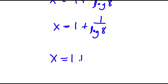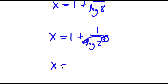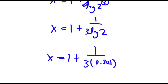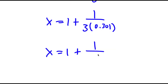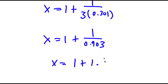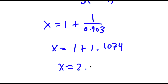Now log 8 I can rewrite as log 2 to the power of 3, and I can move 3 to the front. So now I have x is equal to 1 plus 1 over 3 times log 2. Log 2 is equal to 0.301. So now I have x is equal to 1 plus 1 over 3 times 0.301, which is 0.903. And 1 over 0.903 is 1.1074. So this is equal to 2.1074.